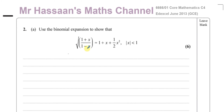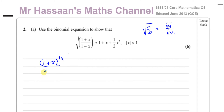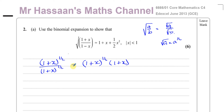First of all, I'm going to rewrite this in a form I can work with. The square root of a fraction a over b is the same as the square root of a over the square root of b. So I'll write this as (1 plus x) to the power of a half divided by (1 minus x) to the power of a half, which I can then write as (1 plus x) to the power of a half multiplied by (1 minus x) to the power of negative a half, using the rule that 1 over a to the power of n equals a to the power of minus n.